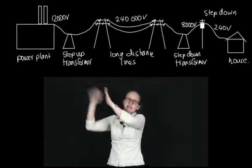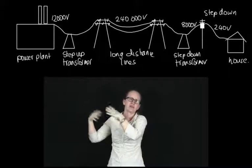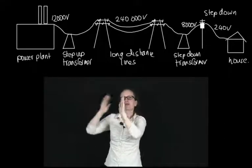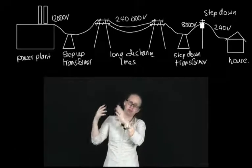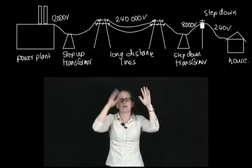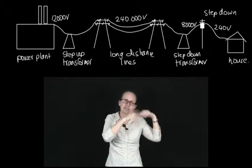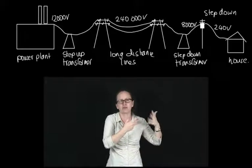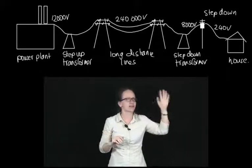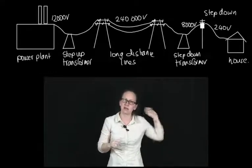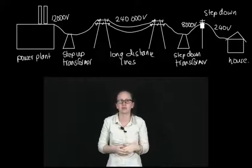In our power grid, electricity is generated in the power plant at around 12,000 volts. It then goes to a step-up transformer where it's stepped up to around 240,000 volts to reduce the current for long-distance transmission. It travels through power lines to the outskirts of the city, where a step-down transformer brings it to around 8,000 volts. It's then sent to local streets and residences, and just before reaching homes, another small step-down transformer reduces it from 8,000 volts to the 240 volts used at home.